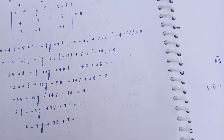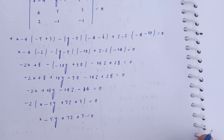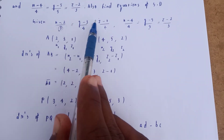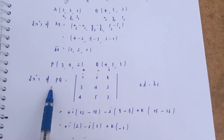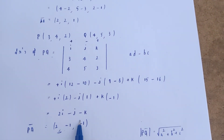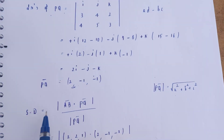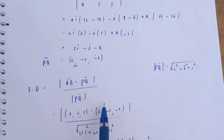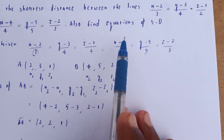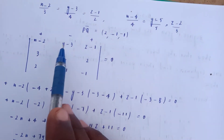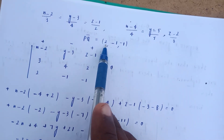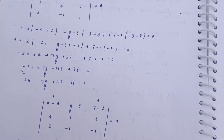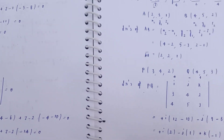To summarize the method: first find DRs of AB from the two given line points. Second, find DRs of the second line. Third, compute PQ bar using the IJK cross product formula. Then apply the shorter distance formula: AB bar dot PQ bar divided by mod PQ bar. To find equations of SD, form planes through each line using the line DRs and PQ DRs. This is the complete method for this important problem.